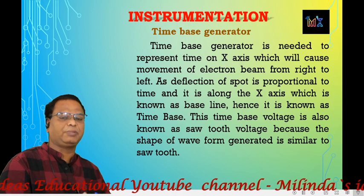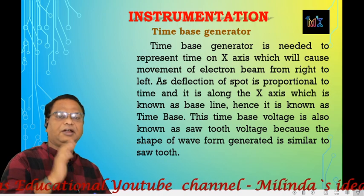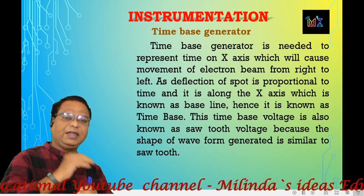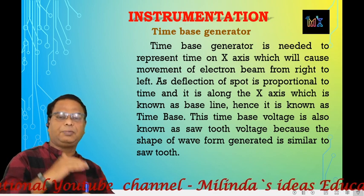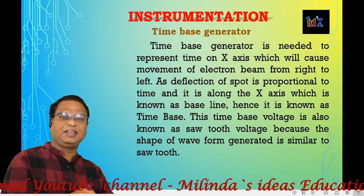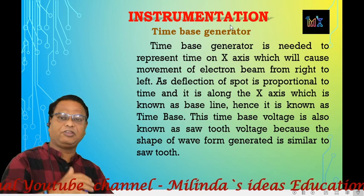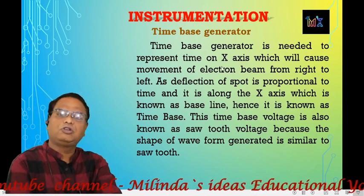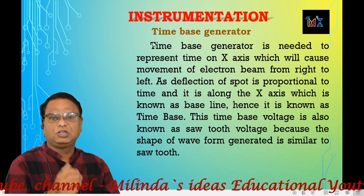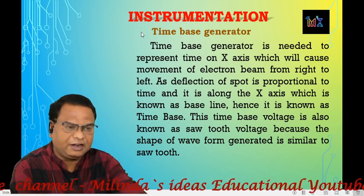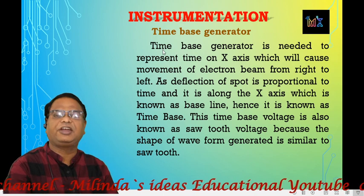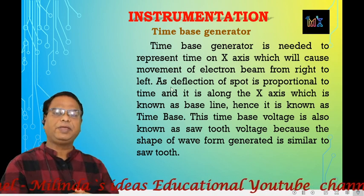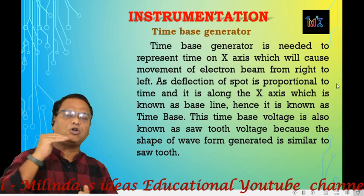When you apply two signals, you can apply the time-based generator used in CRO. But when only the y-input is applied to the CRO, the x-input needs to be generated, and for that purpose we have to use the time-based generator. The time-based generator generates the horizontal signal which causes the electron beam to move along the x-axis.